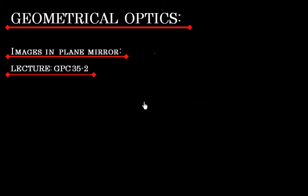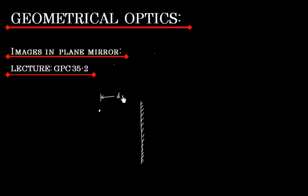In this lecture, we will discuss image formation in a plane mirror. Let us say we have a plane mirror, and object A is kept at a distance D from the plane mirror.